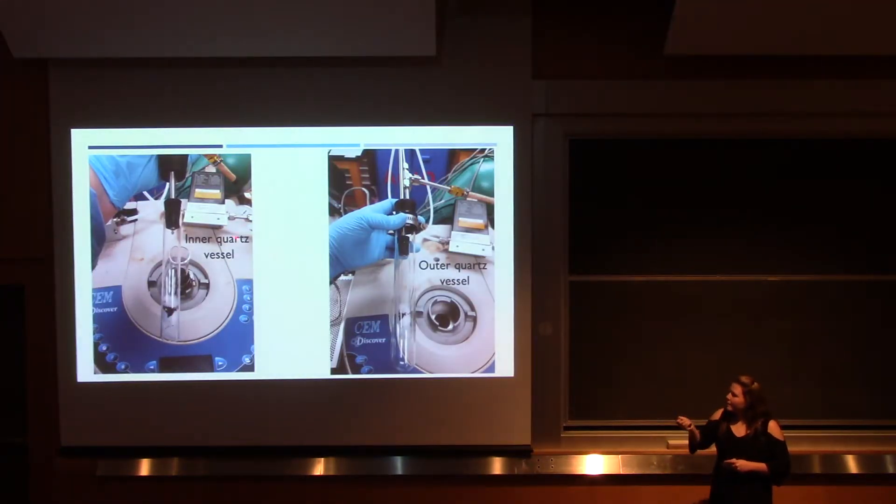This is the inner quartz vessel, and it has the two pieces of quartz wool with the carbon in between. And then this rubber stopper acts as a seal that only allows carbon monoxide to flow out into the exhaust gas line. This is the outer quartz vessel, which has the inner quartz vessel within it. It also has the gas seal, and only allows carbon dioxide to flow in.